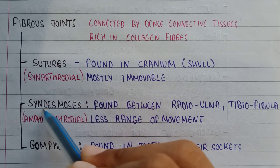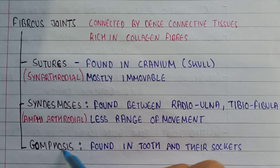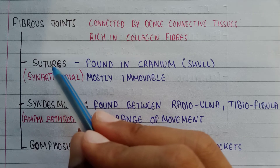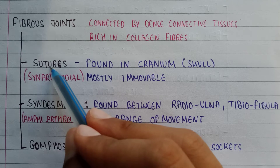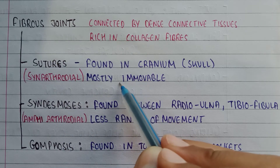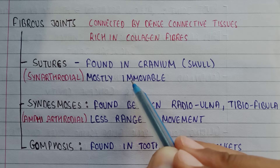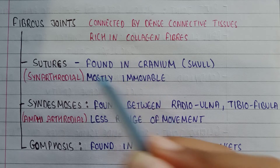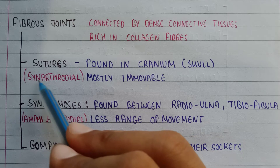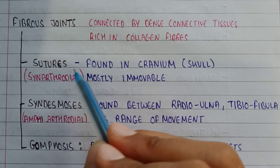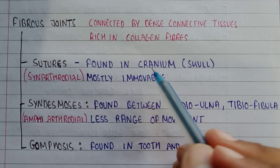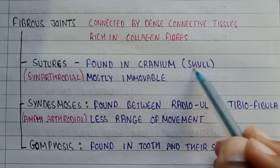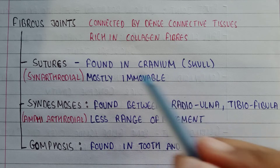First is sutures, second is syndesmosis, and third is gomphosis. Sutures are mostly immovable joints — they do not show any movement. The other name for sutures is synarthrodial joints. An example of sutures is that they are found in the cranium, where the bones of the skull are joined by sutures.